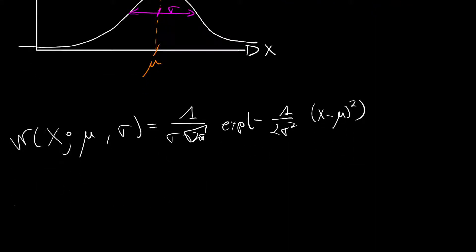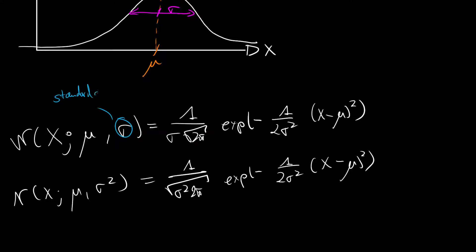The other definition is by the normal over x with given mu and sigma squared for the variance. Then we have 1 over the square root of sigma squared times 2 pi times the exponential of minus 1 over 2 sigma squared then in brackets x minus mu squared. So here we have the standard deviation and that is the variance. The first version is what you typically see in TensorFlow probability and the second version is commonly used in textbooks.